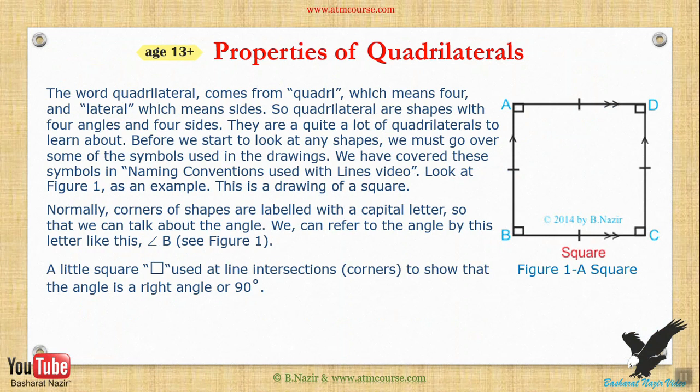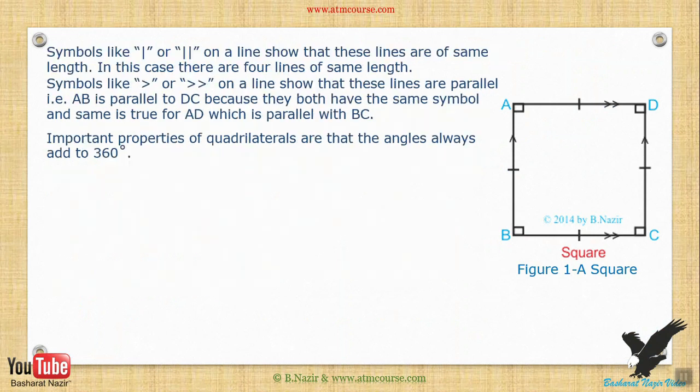We have covered these symbols in the naming conventions used with lines video. Look at figure one as an example — this is a drawing of a square. Normally, corners of shapes are labeled with a capital letter so that we can refer to the angle by that letter, like angle B. A little square is used at corners to show that the angle is a right angle. Small vertical lines on a line show that these lines are of the same length. Symbols like a single greater-than sign or two greater-than signs on a line signify that these lines are parallel — i.e., AB is parallel to DC, and AD is parallel to BC.